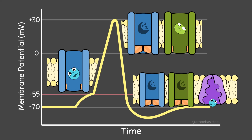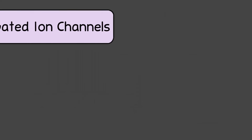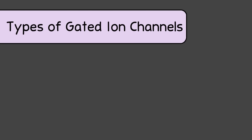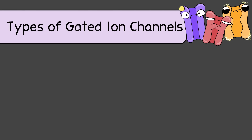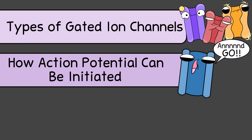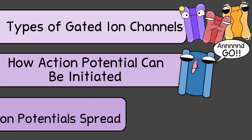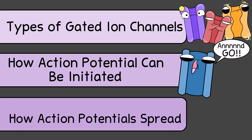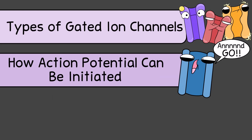That covers the overall events in an action potential, but there are three major concepts to mention. Number one: we mentioned gated ion channels — what are the different types and how do they work? Number two: how are these channels involved in initiating the action potential? And number three: how are action potentials spread — or propagated?